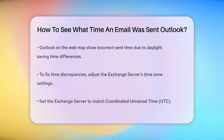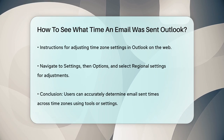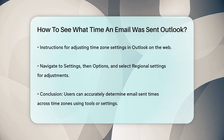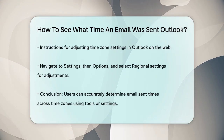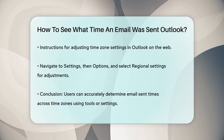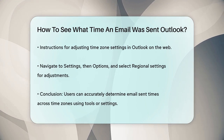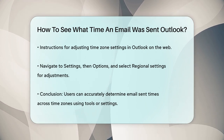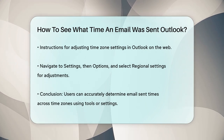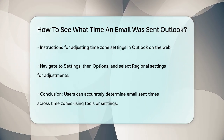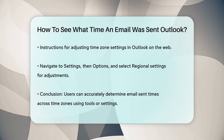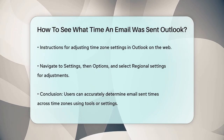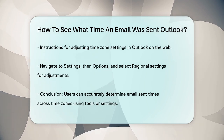In Outlook on the web, you can adjust the time zone settings by going to Settings, then Options, and finally to the Regional Settings. Here, you can select the correct time zone to ensure the sent time stamps are accurate.